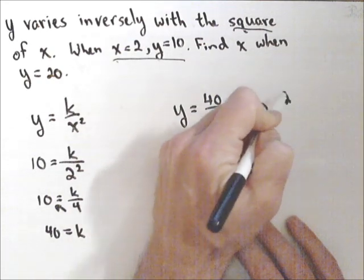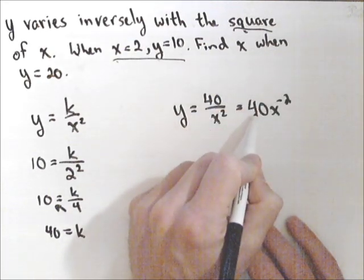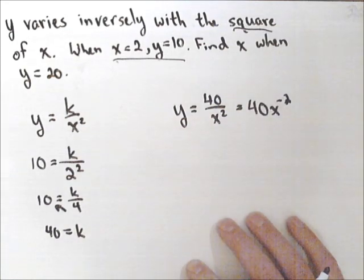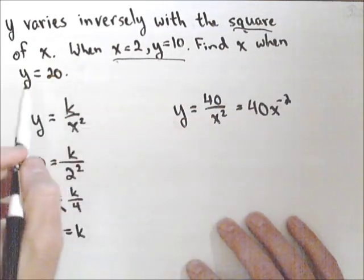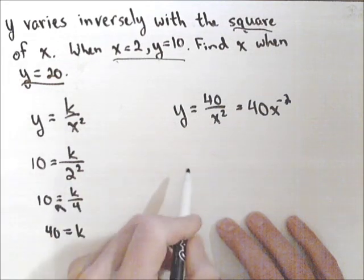And we can see we have a power function with a vertical stretch of 40 and an exponent of negative 2. Now, the other part is, we're asked to find x when y is 20.